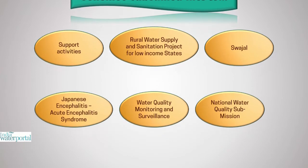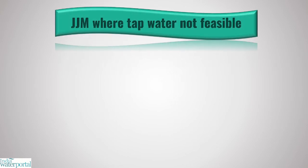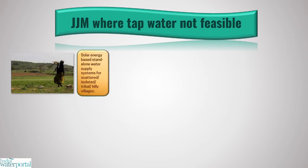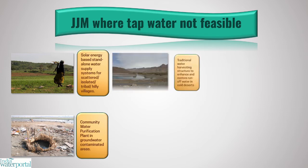In areas where tap water connections are not feasible, local innovations or technological solutions will be explored. Suggestive technological solutions to address challenges in the supply of drinking water include: solar energy-based standalone water supply systems for scattered, isolated, tribal, and hilly areas; and community water purification plants in groundwater-contaminated areas.